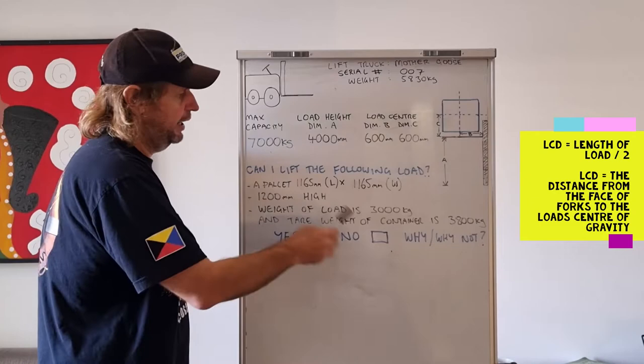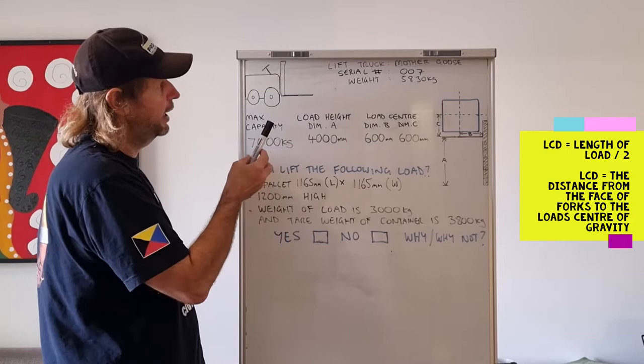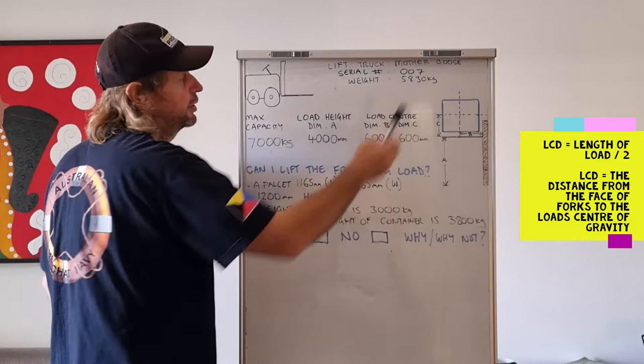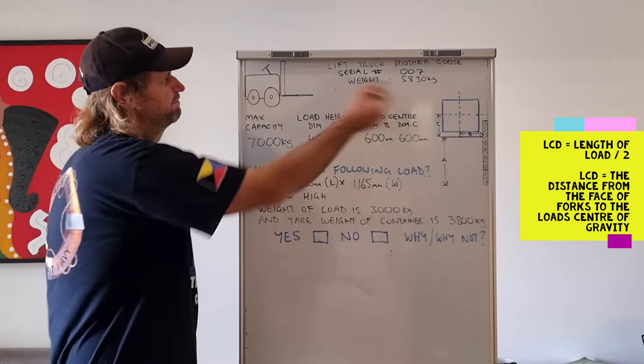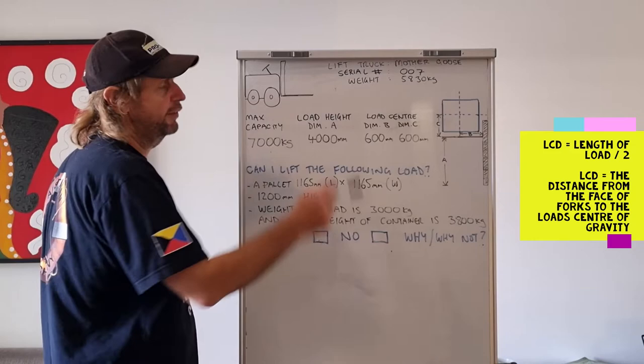Up here is our data plate. So we've got the data plate here. It says it's a lift truck, it's a Mother Goose forklift truck. Serial number is 007, believe it or not, and the weight is 5830 kilograms. So we don't need to worry about that for our equation today because we're not driving over a bridge or anything like that. And the brand doesn't really matter.